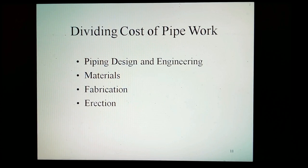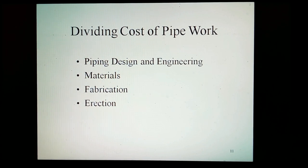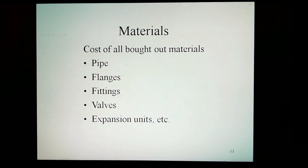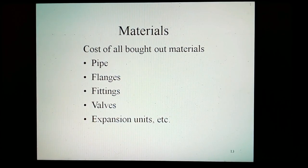Dividing the cost of pipe work. The costs of the process industry pipe work are usually subdivided as follows: pipe design and engineering, materials, fabrication, and erection. Pipe design and engineering covers the cost of design work associated with the pipe work, including layout studies, scheming, analysis, and detailing. Materials covers the cost of all bought-out materials — that is, pipe, flanges, fittings, valves, expansion units, etc.